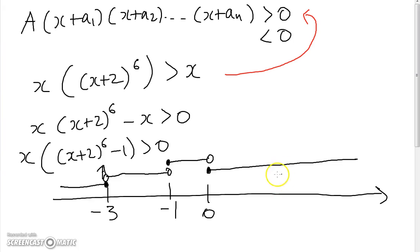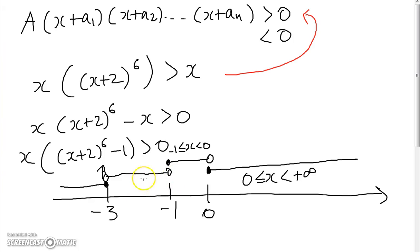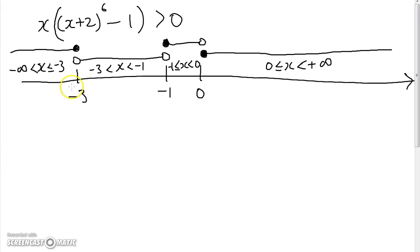Algebraically, the four segments are: piece 1 — x ≥ 0 (to +∞); piece 2 — -1 ≤ x < 0; piece 3 — -3 < x < -1; and piece 4 — x ≤ -3 (to -∞). So we've partitioned the number line into four different pieces.